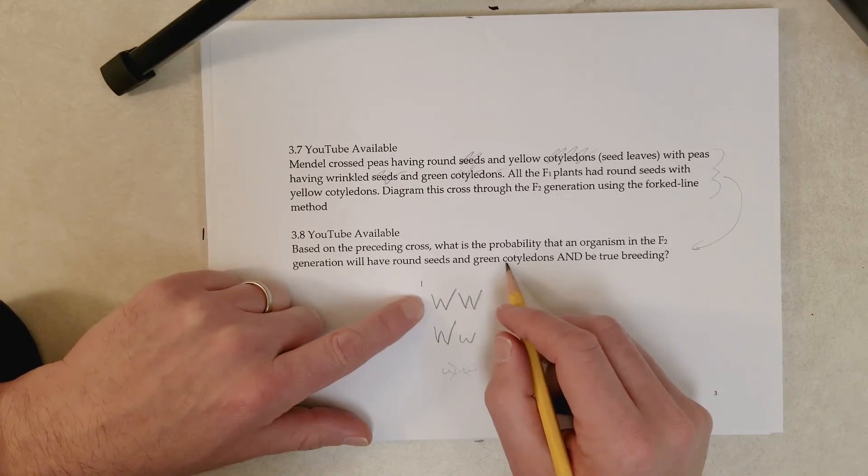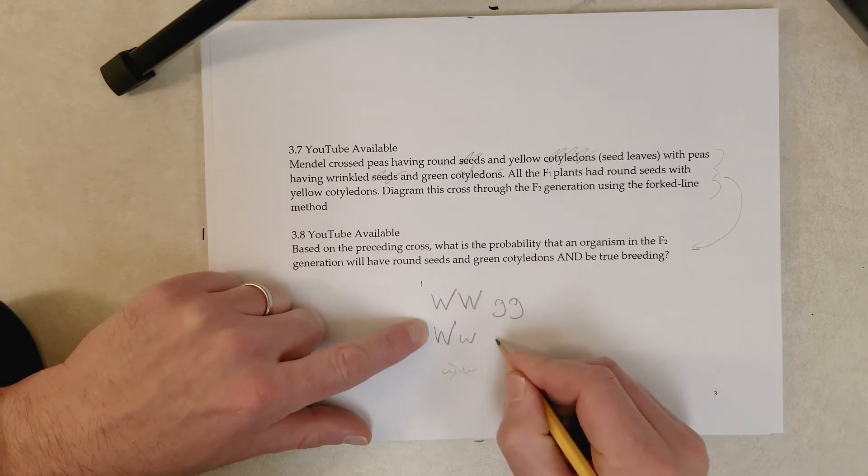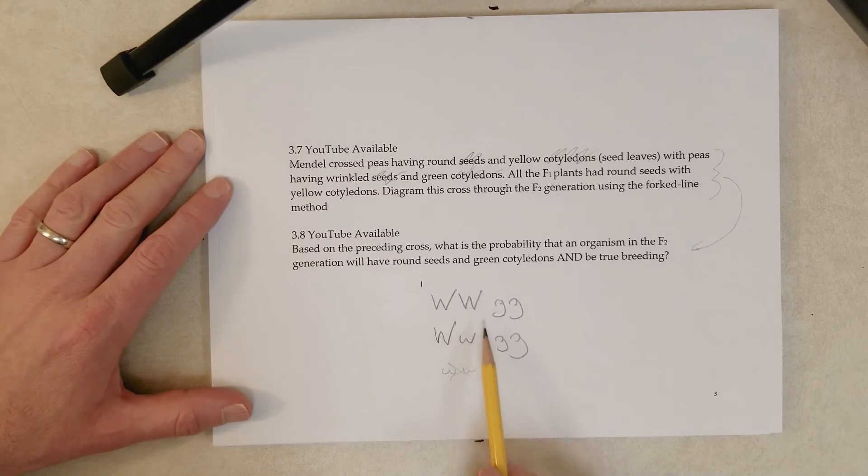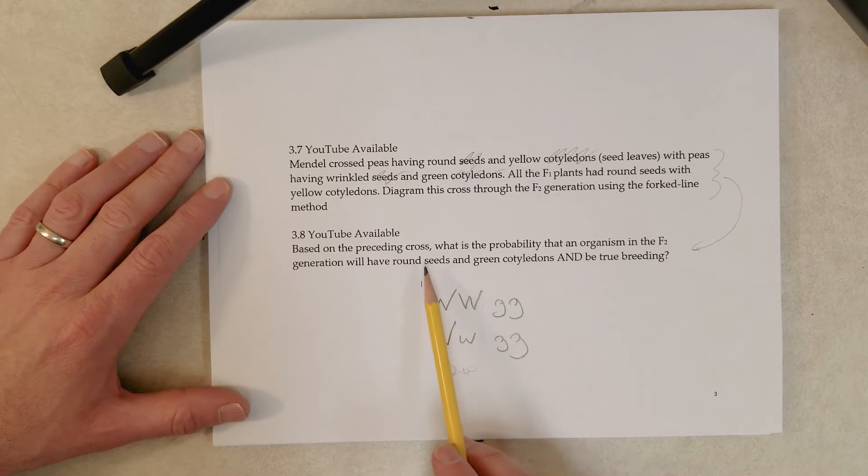So, what about green cotyledons? Only one genotype can have green cotyledons, two little g's, right? So, both of these genotypes would be of a plant that is from a round seed and has a green cotyledon.